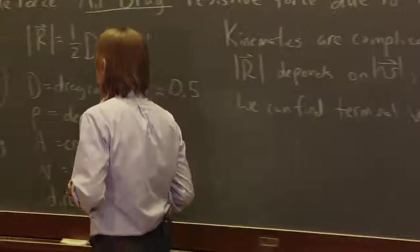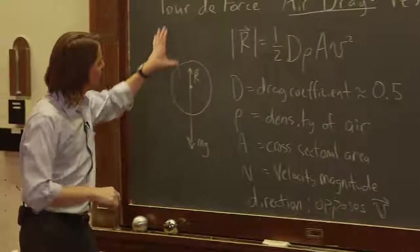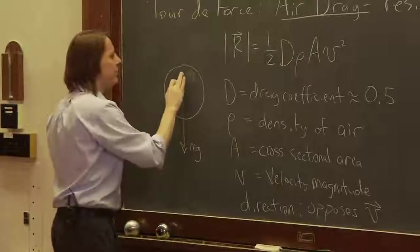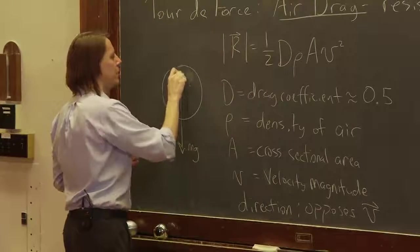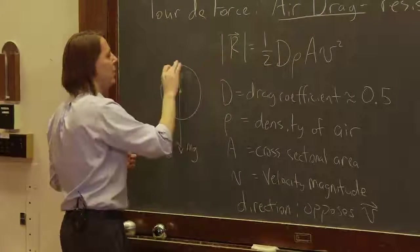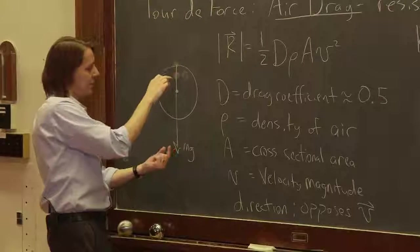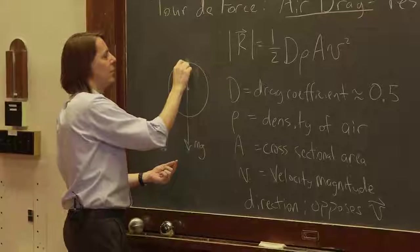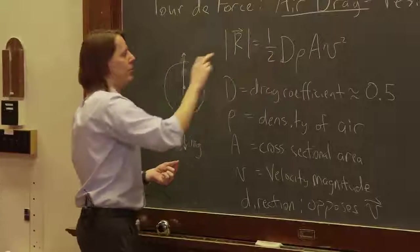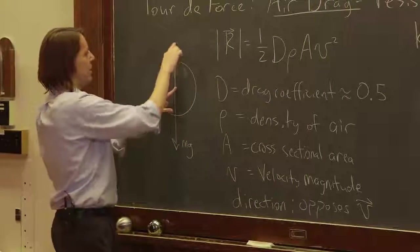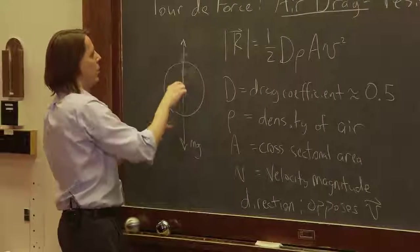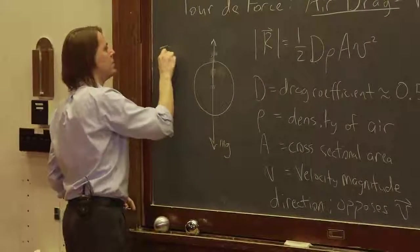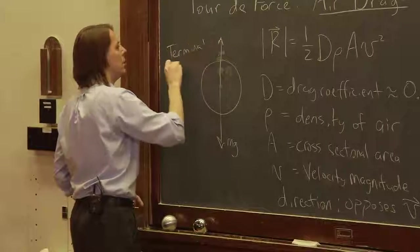Terminal velocity means it will keep accelerating and accelerating. As it accelerates, v will get bigger, and when v gets bigger, R gets bigger. Eventually it would reach the point where this is the same size as mg. Eventually, when you reach terminal velocity, that's the point where the sum of the forces equals zero.